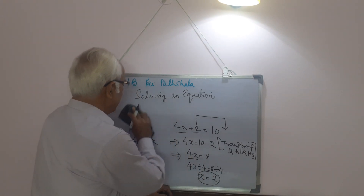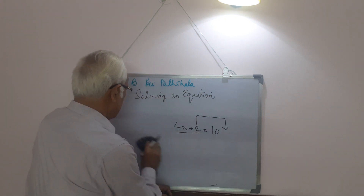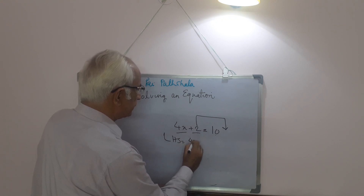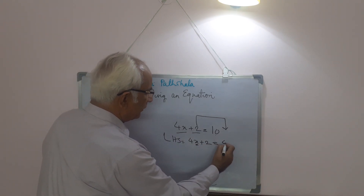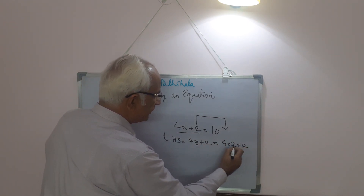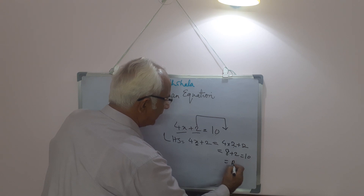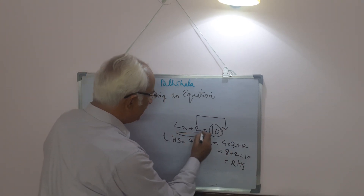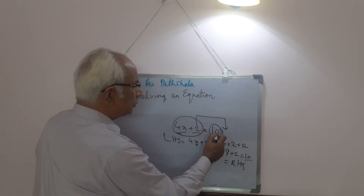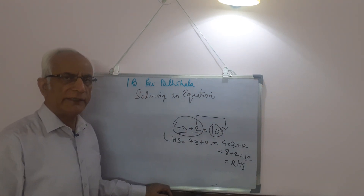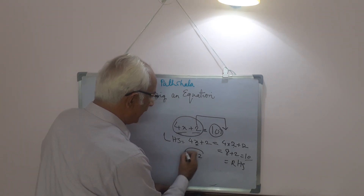We can verify whether our answer is right. We take the left hand side of the equation, which is 4x plus 2, and substitute the value x equals 2: 4 into 2 plus 2 equals 8 plus 2 equals 10. This equals the right hand side, which is 10. The value of both sides is the same — they are equal. Therefore, x equals 2 is the correct answer.